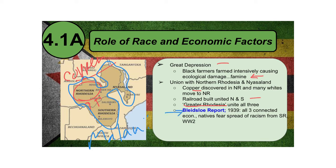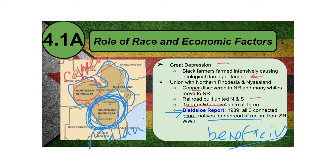The British sent a group to investigate and created the Bledisloe Report in 1939. It concluded that all three territories were economically connected and that merging would be beneficial. However, it also noted that native fears of the spread of racism from Southern Rhodesia into the other two areas were very prominent. Crucially, this was the first time black voices were heard in London, and the British government was in direct support of black voices. Unfortunately, World War II started in 1939 and all discussion ended.